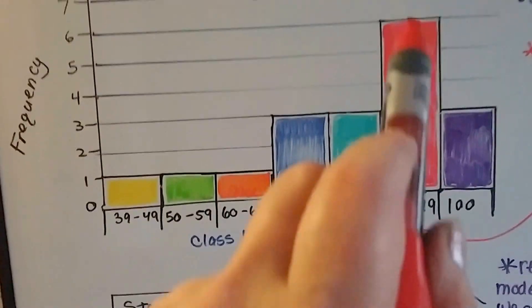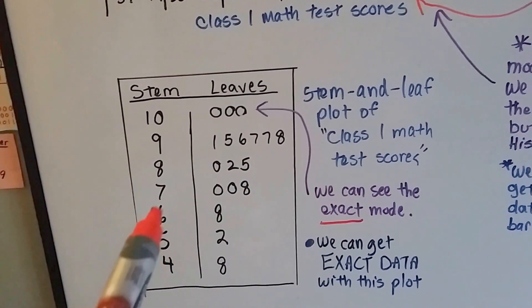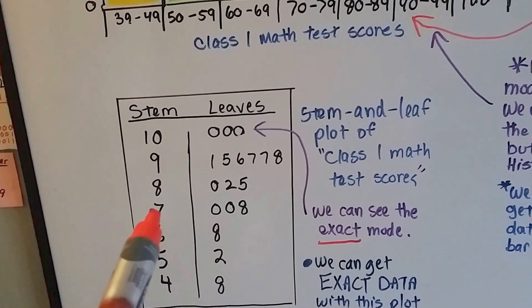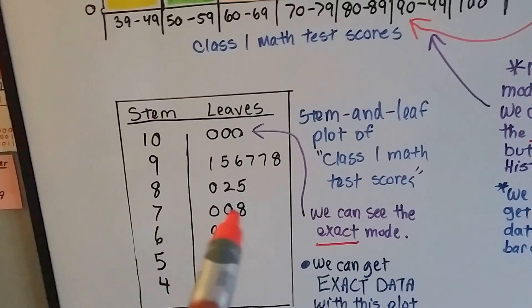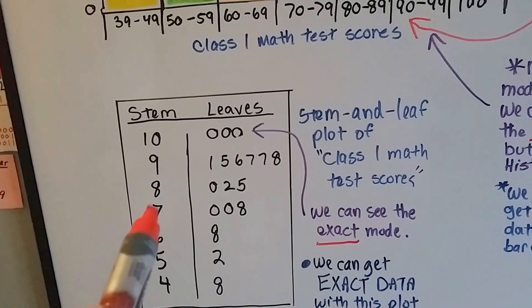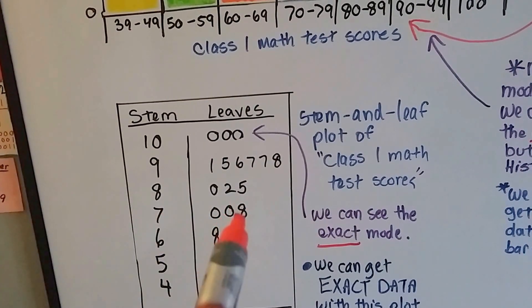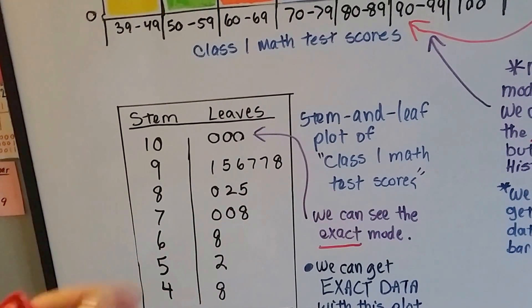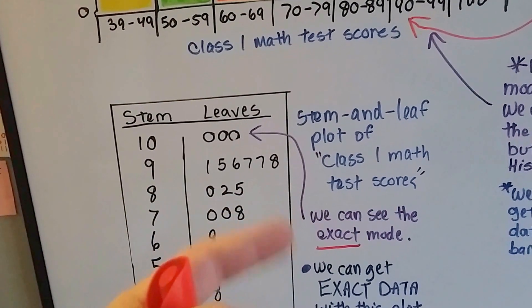Now if you notice, there's 6 here — because of the same scores, they're just on two different types of graphs. Someone scored a 70, another person scored a 70, and someone scored a 78. That's the tens digit, and this is the ones digit. They group them all together and go in ascending order to the right as they get bigger.